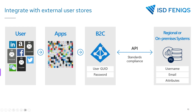Azure B2C has only 50 properties that can be used inside your applications. This means if your customer data requires additional fields — for example, if your customer has a third name — you can add that through the external user store.